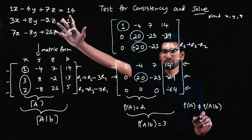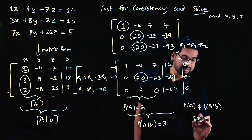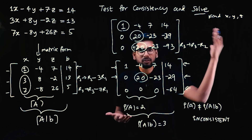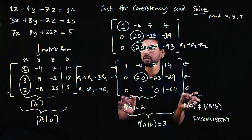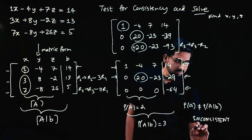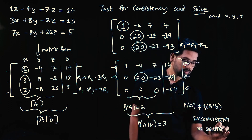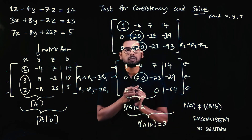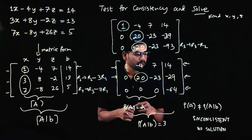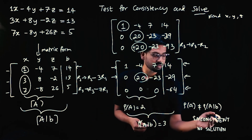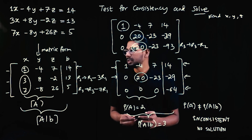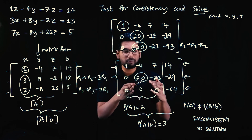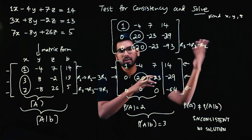Since rank of A is not equal to rank of augmented matrix AB, the system is inconsistent. There are no x, y, z values that satisfy all three equations — no solution. You should know this condition: if rank(A) equals rank(AB), the system is consistent; if rank(A) is not equal to rank(AB), the system is inconsistent and has no solution.